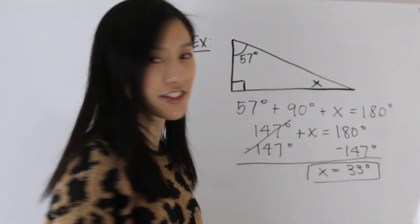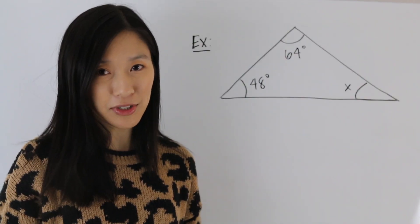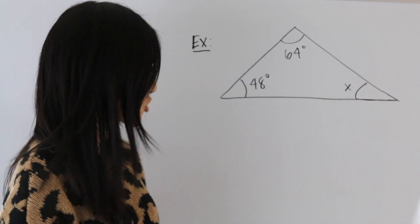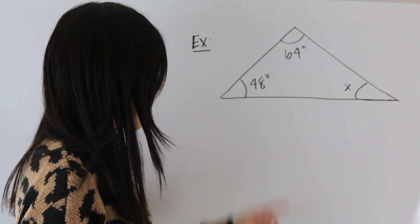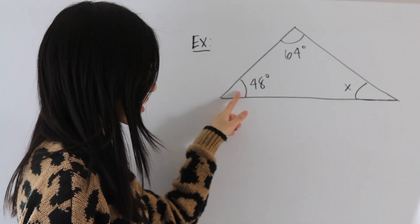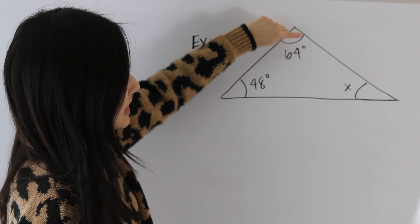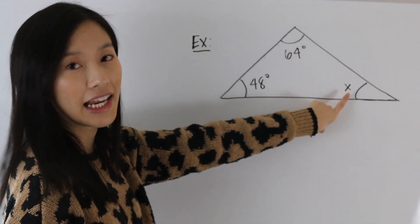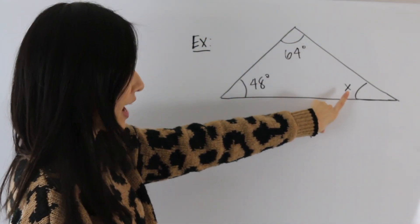And that's your final answer. Let's take a look at this last example here. So in this example, we have this triangle, and we're told that this angle here is 48 degrees, this angle up here is 64 degrees, and we're asked to solve for this missing angle denoted by the letter X.